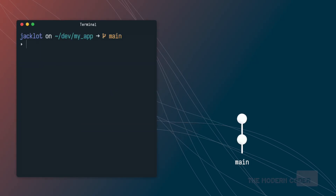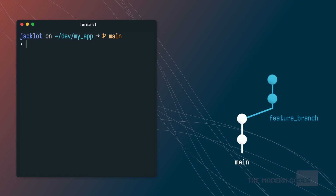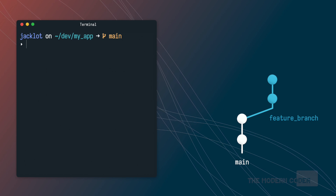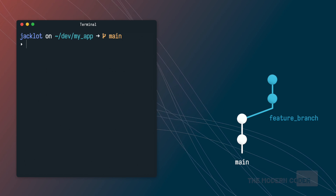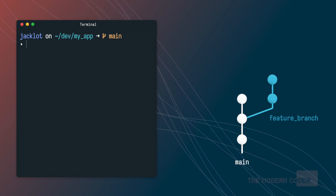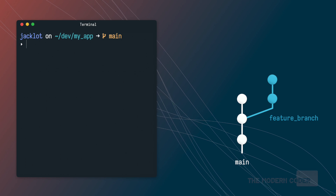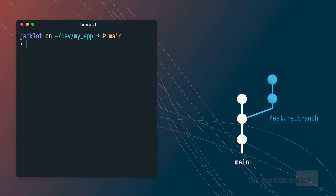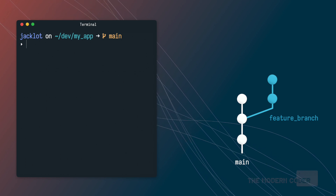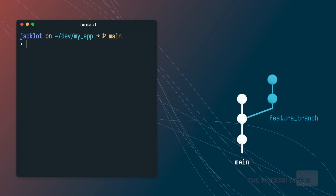Say you're working on a project and you split off from mainline to work on a feature branch. Maybe a coworker also pushes changes to mainline in the meantime. Now once that feature is complete and tested, I'm going to be ready to merge my changes back onto that mainline branch.